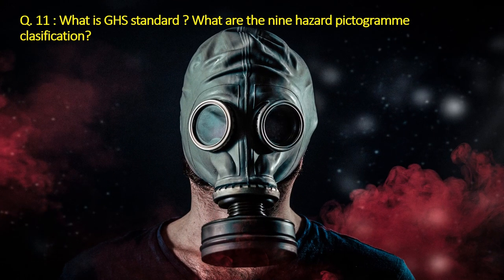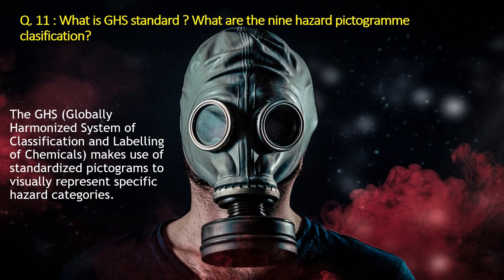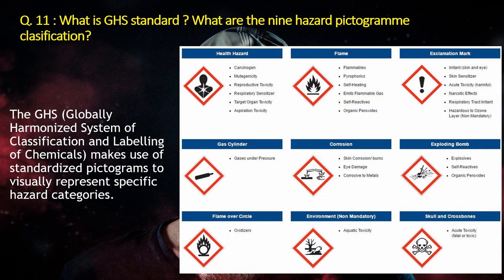Question number 11: What is the GHS standard? What are the 9 hazard pictogram classifications? The GHS — Globally Harmonized System of classification and labeling of chemicals — makes use of standardized pictograms to visually represent specific hazard categories. It has 9 hazard pictograms. The first pictogram is for health hazard, where carcinogenic, mutagenicity, reproductive toxicity, and respiratory sensitizer all come under. The second pictogram is for flames, in which flammable, self-heating, emits flammable gases, and self-reactive gas type hazard categories come.